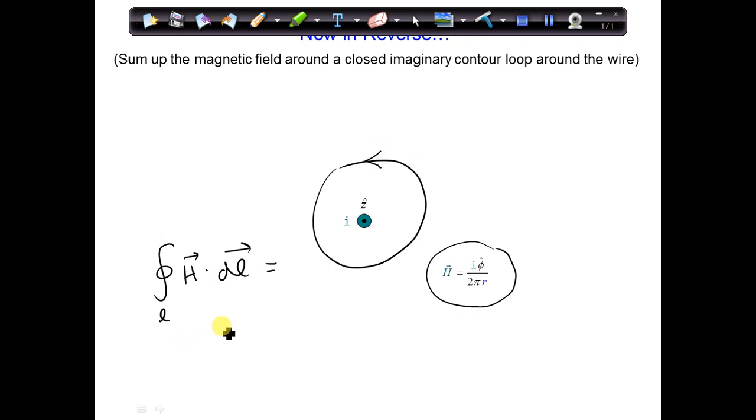So, let's plug in the magnetic field expression. We have I phi hat 2 pi r dotted with dl. The contour line is a closed loop, meaning we're integrating along the circle from 0 to 2 pi. I can pull out the I, that doesn't depend on our integration, and the 2 pi. So, we're integrating from 0 to 2 pi d phi, which is I over 2 pi times 2 pi minus 0 equals I.